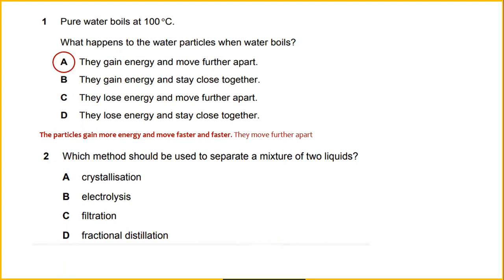Which method should be used to separate a mixture of two liquids? Fractional distillation is used in separations of two miscible liquids. The answer will be D.